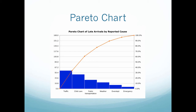This graph shows reasons why people arrive late to things. The bins are: traffic, child care, public transportation, whether they overslept, or an emergency happened. Out of all the people surveyed, about 55 said it was because of traffic, and then 40-something said because of child care, and so on. It's similar to a histogram in that we graph the frequency on the y-axis, but this time we put the highest bin first.